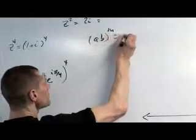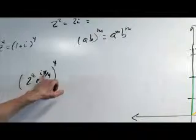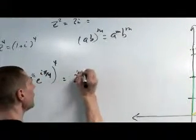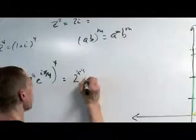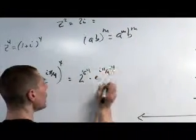ab to the m is a^m b^m, right? So this 4 hits here, and it hits here. This is going to be 2 to the 1 half times 4, times e to the i pi over 4, times 4.